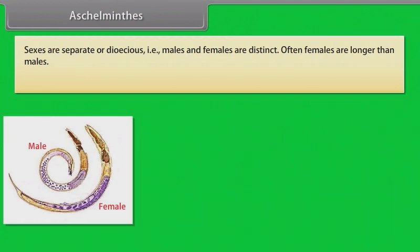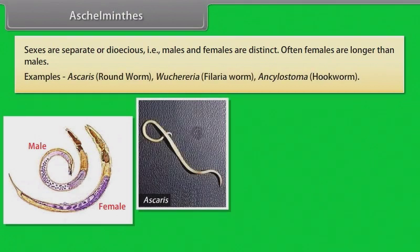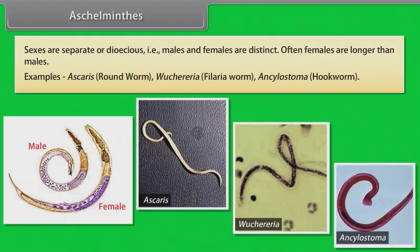Often females are longer than males. Examples: Ascaris, that is roundworm; Wuchereria, that is filarial worm; Ancylostoma, that is hookworm.